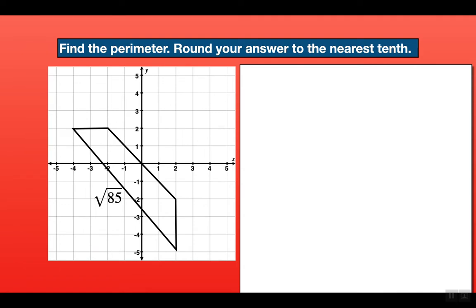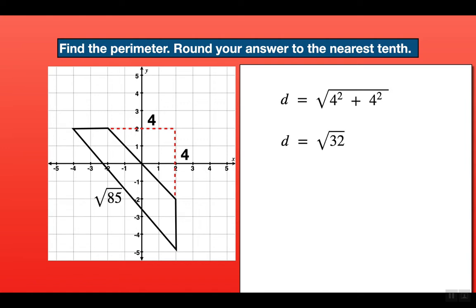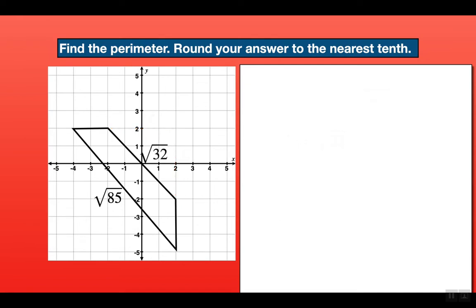Now let's calculate the length of the other slanted line at the top of the trapezoid. The run is 4 and the rise is also 4. So 4 squared plus 4 squared is 16 plus 16, and our distance is the square root of 32 — let's leave it in that form. The horizontal line at the top has a distance of 2 and the vertical line on the bottom right has a distance of 3.